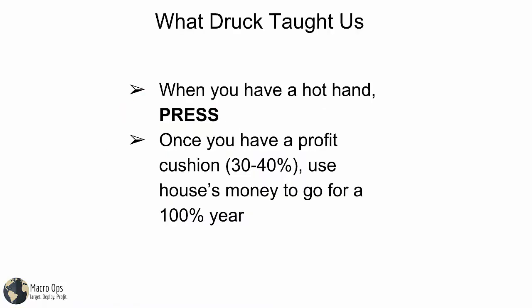Druck also told us that you have to press a hot hand. A hot hand is when you're up about 30 to 40% for the year — you can use that house money to go for a 100% year and really boost your long-term track record. So many guys get that decent year and just go to the beach and say they're done. But Druck never stopped when he had it and knew where the market was going — he tried to shoot for the stars, and that's what really contributed to his amazing long-term track record.